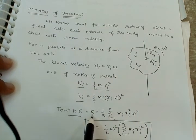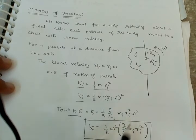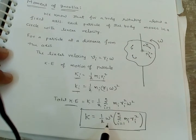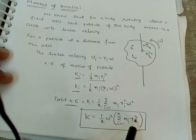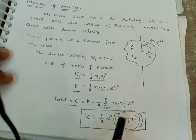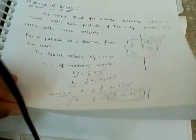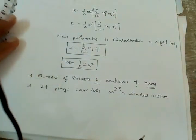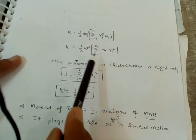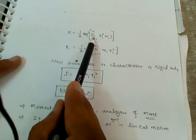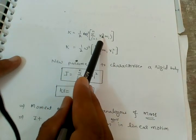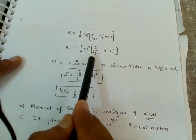The total kinetic energy K equals the sum from i equals 1 to n of half m_i r_i squared omega squared. Taking omega squared outside the summation, we get K equal to half omega squared times the sum from i equals 1 to n of m_i r_i squared.